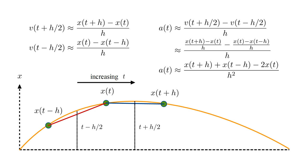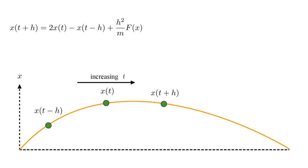Plugging in our velocity approximations and simplifying, we arrive at: a-of-t is approximately (the future position plus the past position minus twice the present position) all over h-squared. We replace acceleration by force over mass, multiply through by h-squared, and solve for the future position. This gives us: the future position equals twice the present position minus the past position, plus h-squared over m times the present force. We can use this equation to move into the future as many time steps as desired.